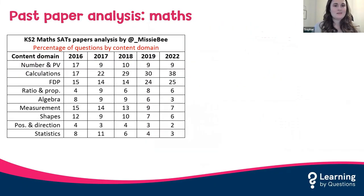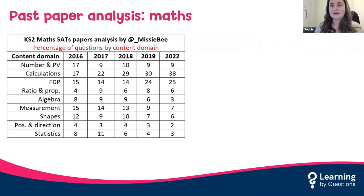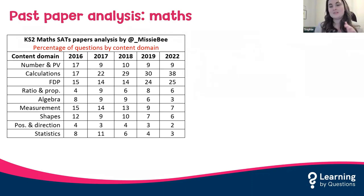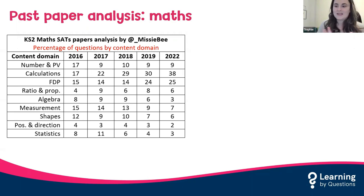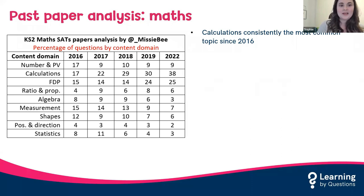Since the new curriculum was introduced in 2014, there have been five sets of SATs papers. After a couple of years I wanted to delve in and see what patterns were emerging — and there are clear patterns. Looking at maths, I've broken down all content domains from number and place value down to statistics, across all three papers: arithmetic and both reasoning. Arithmetic mainly covers operations and fractions, decimals and percentages, but it carries great weight when you add up all the marks.